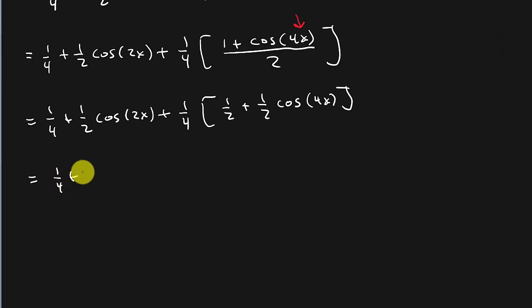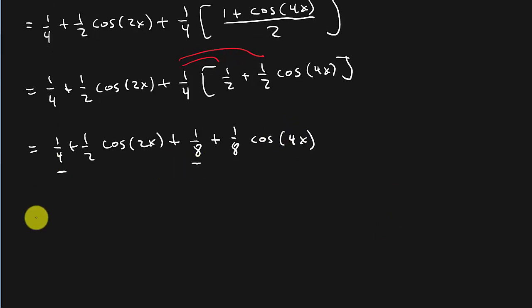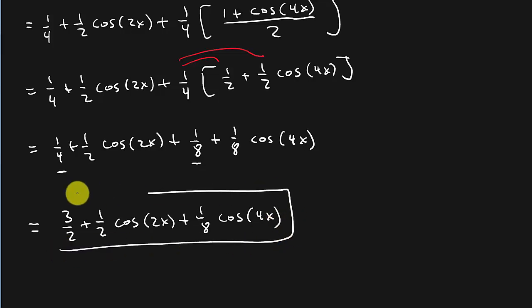And so this is 1 fourth plus 1 half cosine 2x plus, and now I'm going to distribute the 1 fourth. And so that's going to be 1 eighth plus 1 eighth cosine 4x. And there it is, reduced.